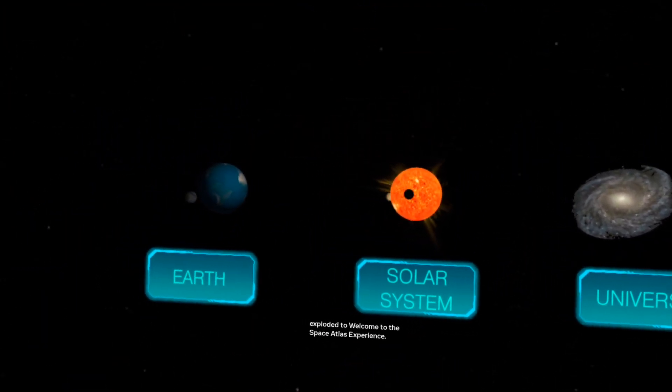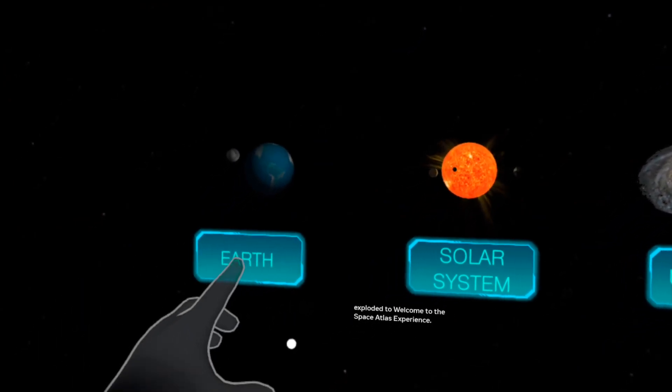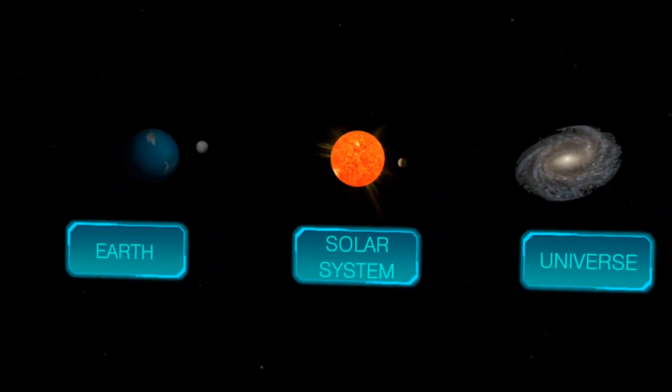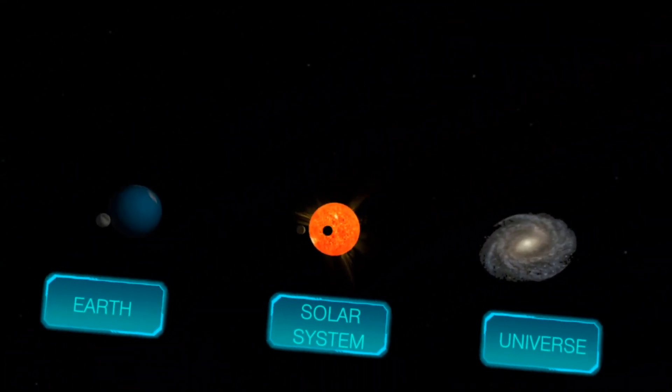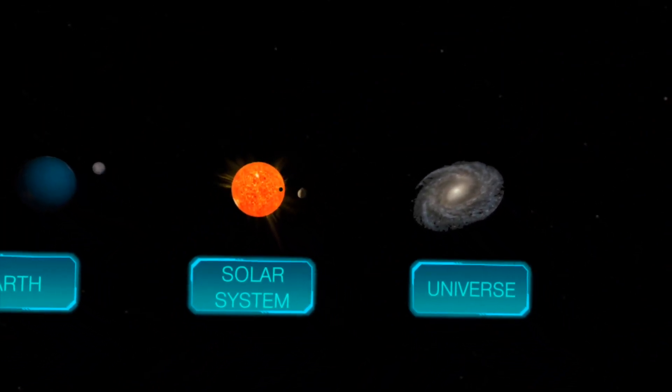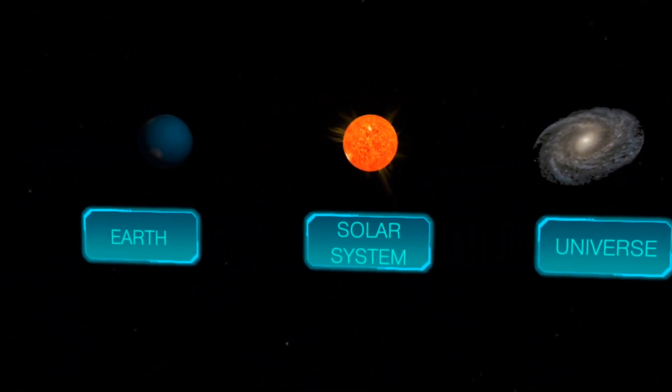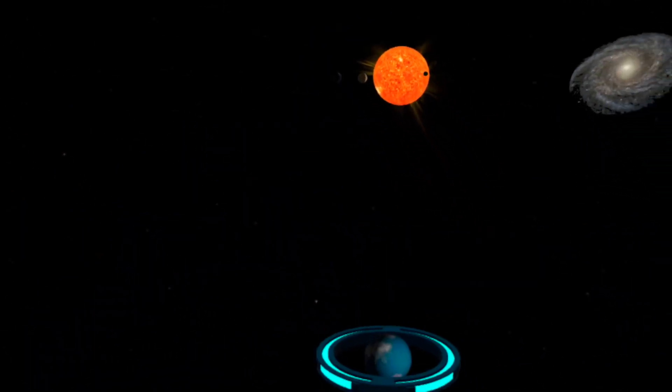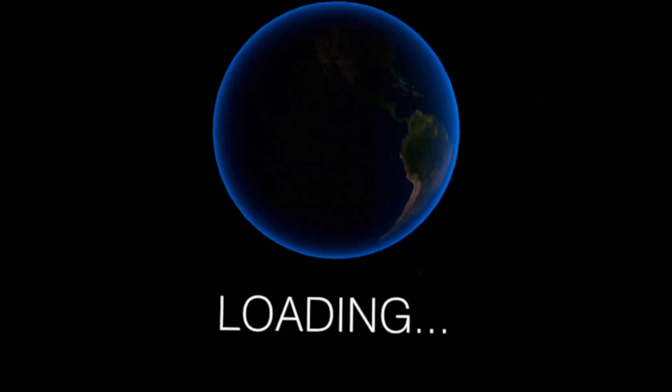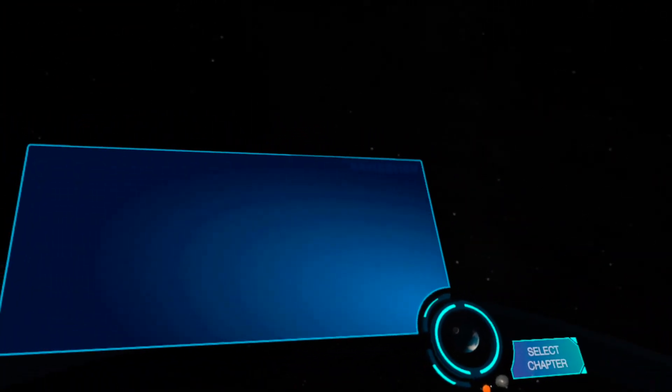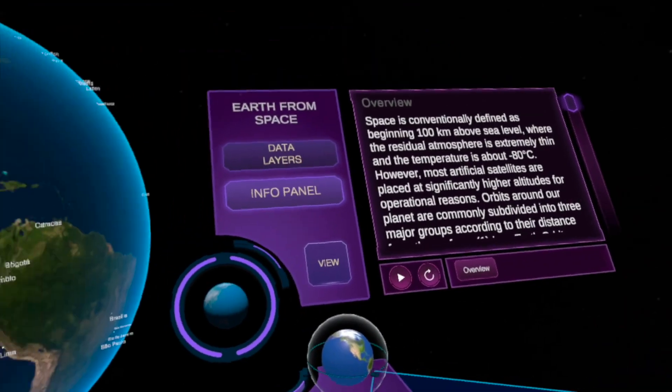Some 3D models can be exploded. The tutorial explains it. Welcome to the Space Atlas experience. There are three chapters: Earth, Solar System, and the Universe. Already did many things. You can have tools, options. This is a free version so some things are very limited. So let's go to the Earth.